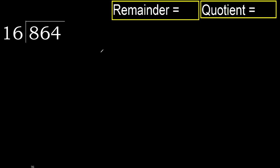864 divided by 16. 8 is less than 16, therefore move to the next digit. 86 is not less than 16, therefore we work with 86 — find which number 16 multiplied by is nearest to 86 but not greater.